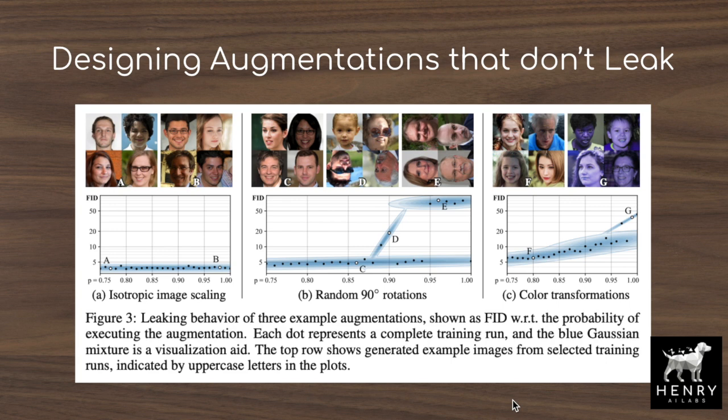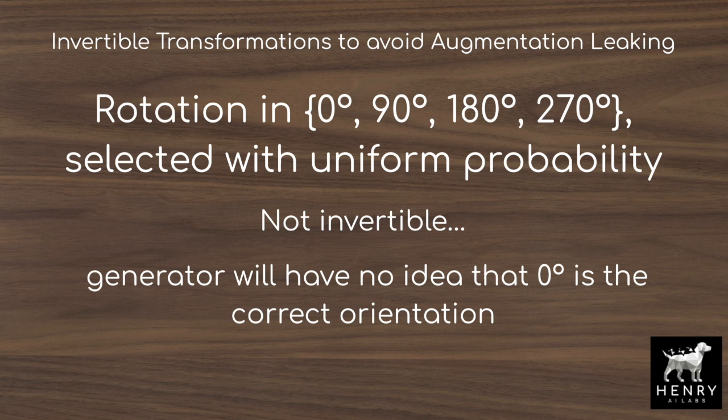The first idea in the paper is to design data augmentation strategies that regularize the discriminator without leaking into the generated distribution. One example is invertible transformations. This is invertible in the sense that you can recover the original data distribution from the set of transformations — not in the sense of normalizing flows. The paper describes two different ways of applying augmentation: one that is invertible and avoids leaking, and one that is not invertible and causes augmentation leaking.